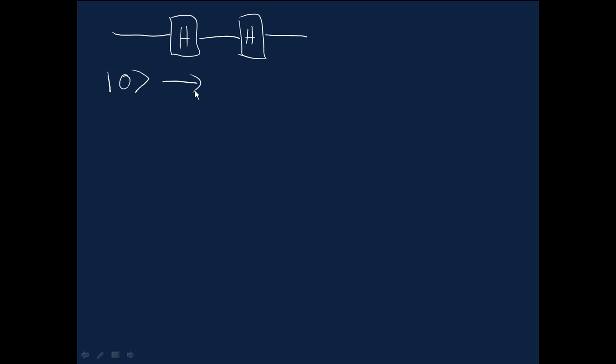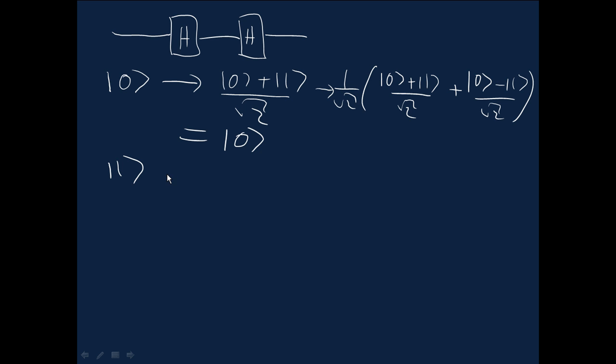Once you've done that, let's look what happens to the zero state. Well, the first Hadamard gate takes it to the superposition (|0⟩ + |1⟩)/√2. And the second Hadamard gate takes, so we've got 1/√2 times [zero goes to (|0⟩ + |1⟩)/√2 plus the one is taken to (|0⟩ - |1⟩)/√2]. And you'll notice that the one terms here cancel each other out. So you're just left with the zero term over √2 times √2, but there are two of them, so you actually end up with the zero state. It's not changed, in other words.